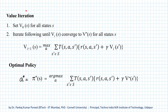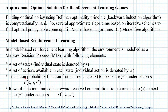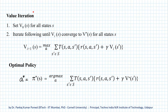The value iteration algorithm is called a model-based reinforcement learning algorithm because the optimal state value function is obtained using two important elements of the Markov decision process: the transition probability function and the reward function. Both these elements come from our model of the environment, so value iteration is a model-based reinforcement learning algorithm.